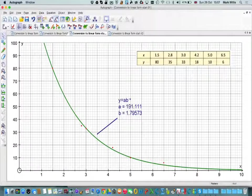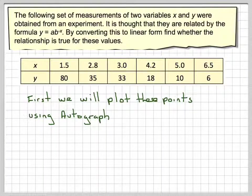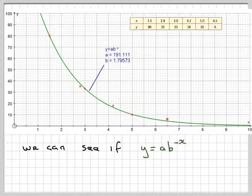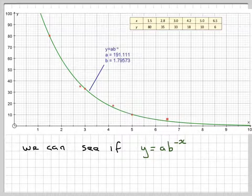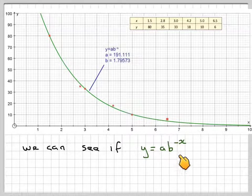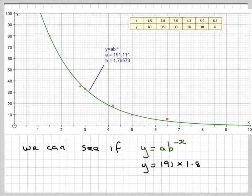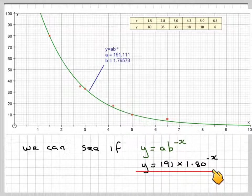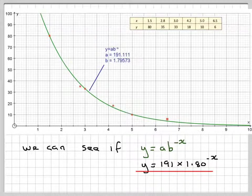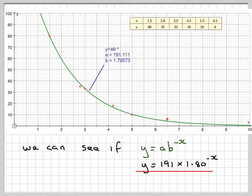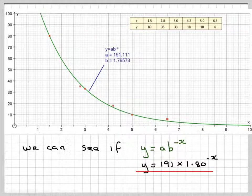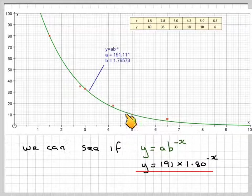Going back to my script, here is the screenshot of what it does. We can see if y equals a, b to the minus x, using this method, then I'm going to get that y equals 1.91 times 1.8 to the minus x, to correct to three significant figures. Now that's doing it with Autograph. However, what you've got to be able to do for the exam, you've got to be able to convert these points into linear form. And this is where you do it.